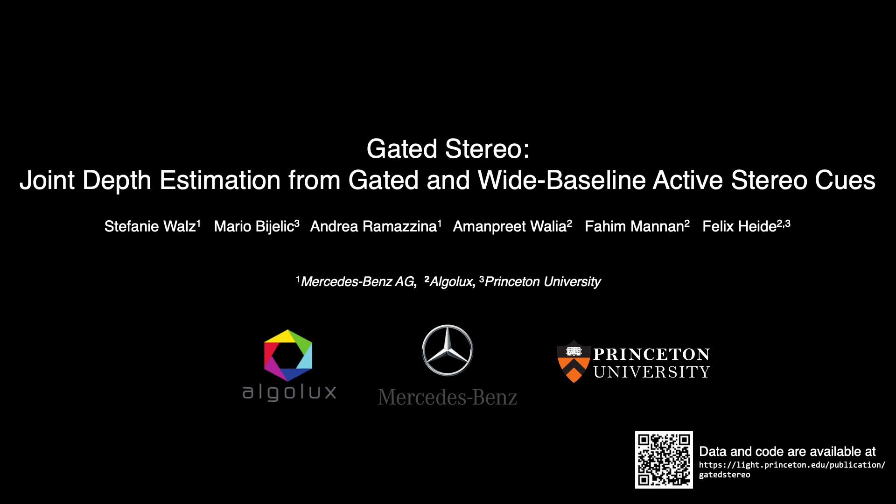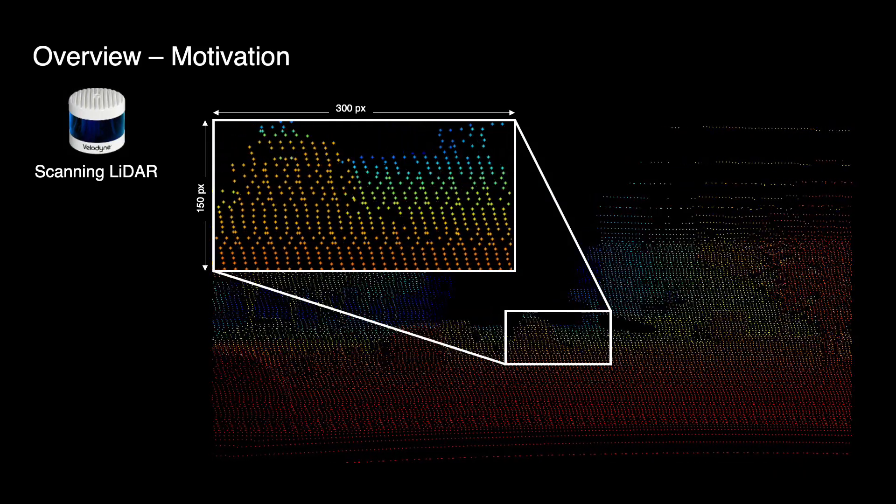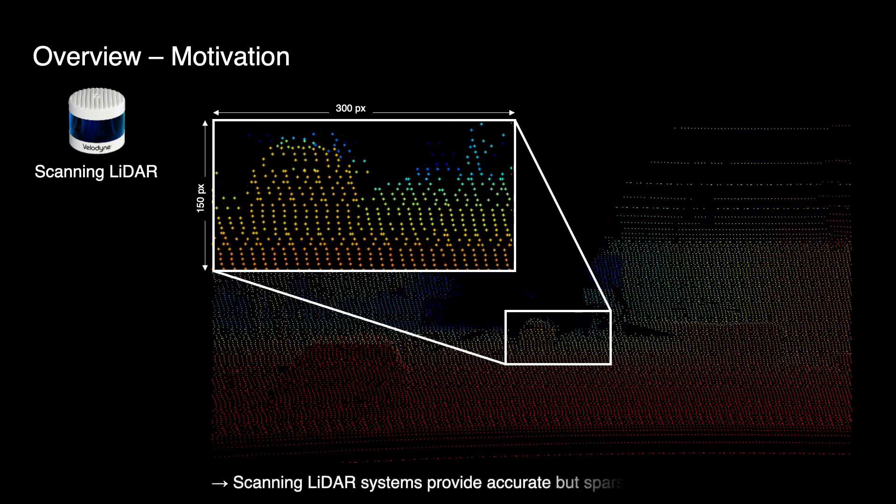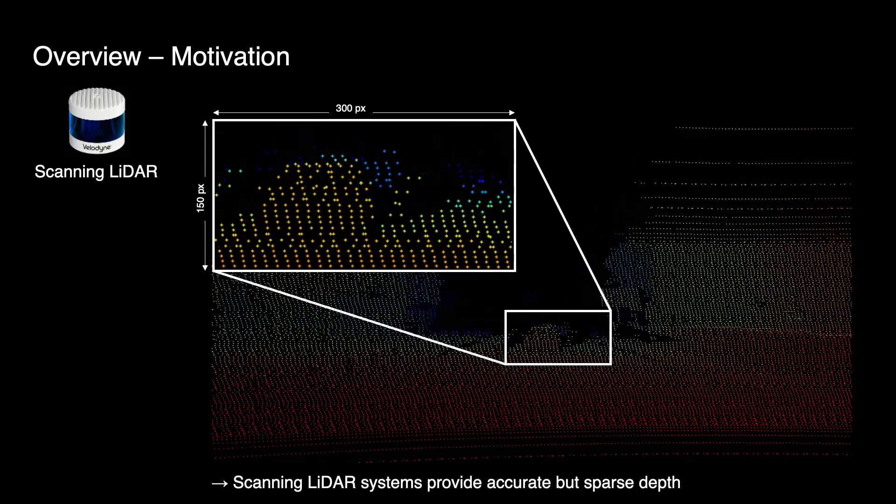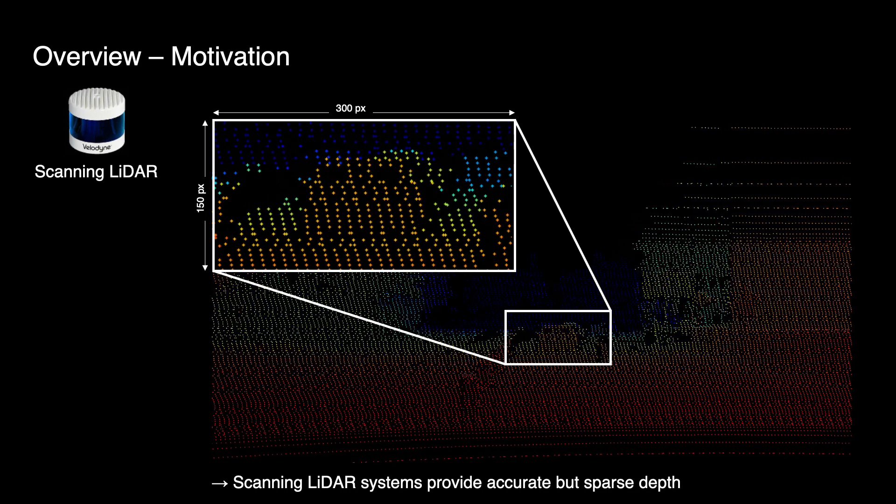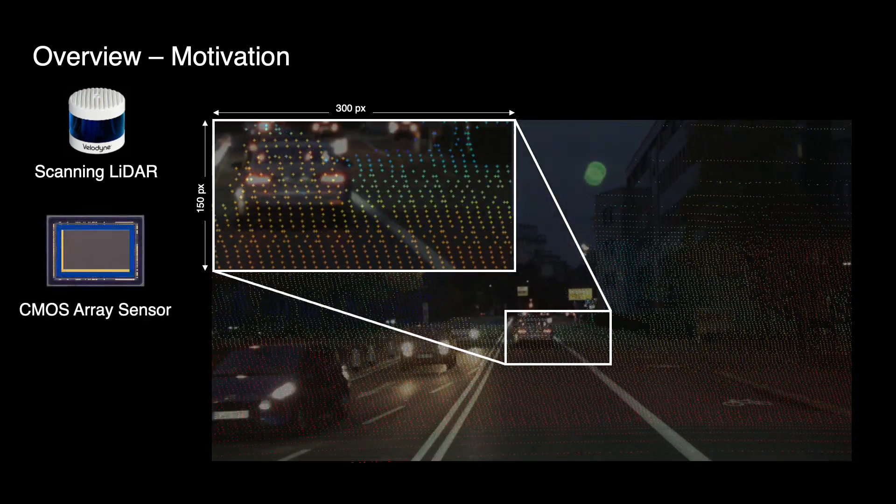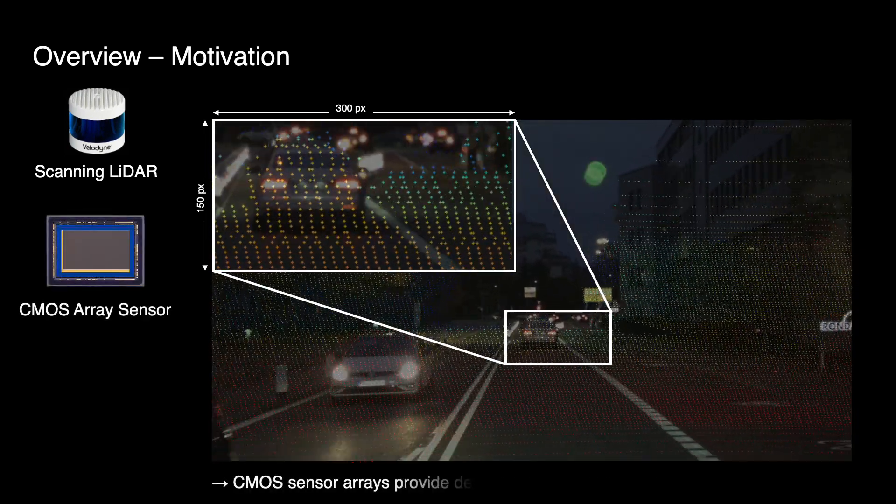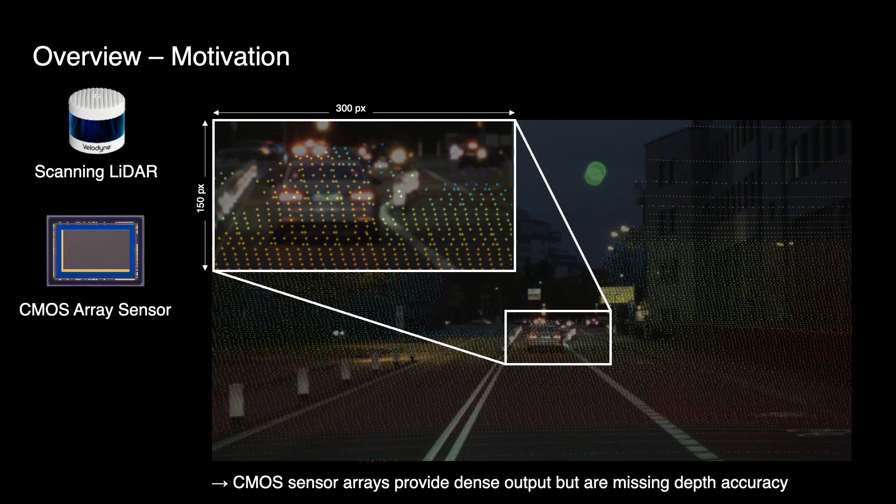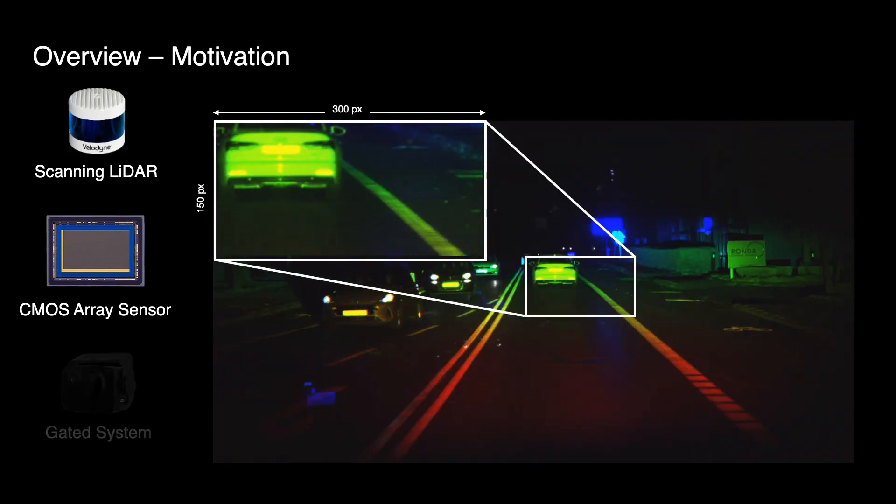We present gated stereo, a depth estimation method that relies on gated and wide baseline active stereo cues. 3D perception of autonomous driving cars relies mainly on lidar systems, which provide accurate but sparse depth measurements. In contrast, RGB imaging CMOS sensor arrays deliver dense outputs but are lacking depth precision.